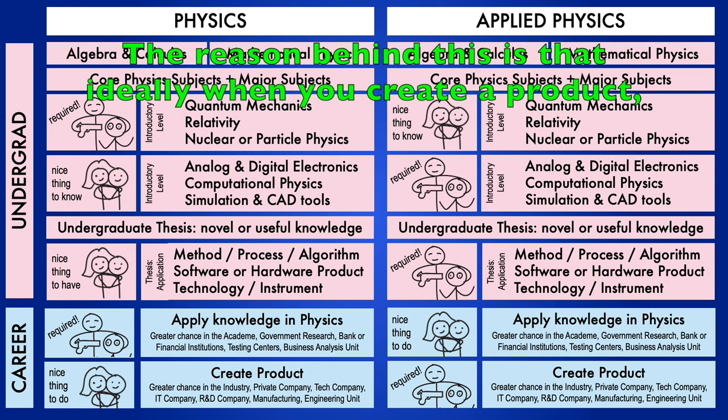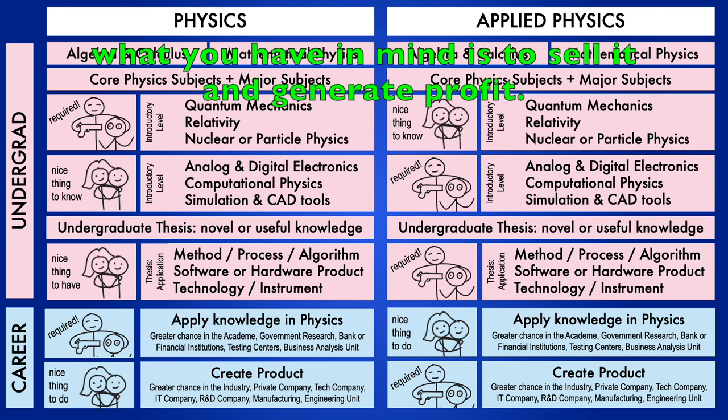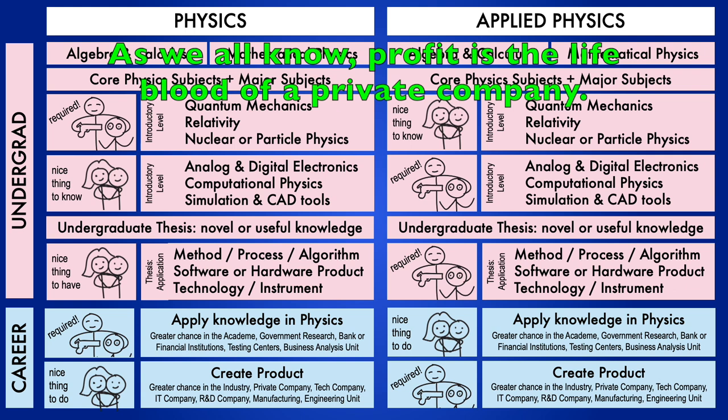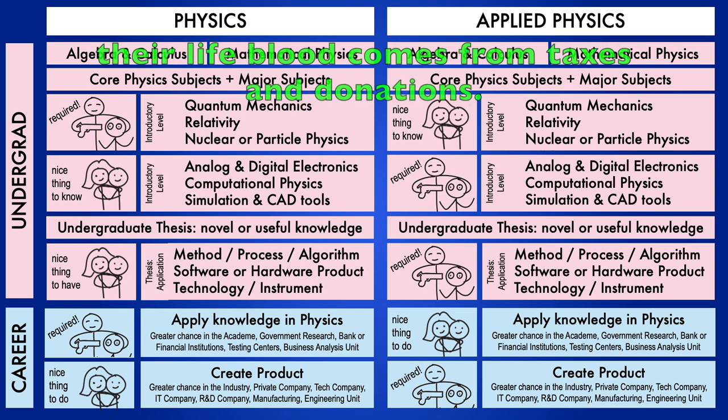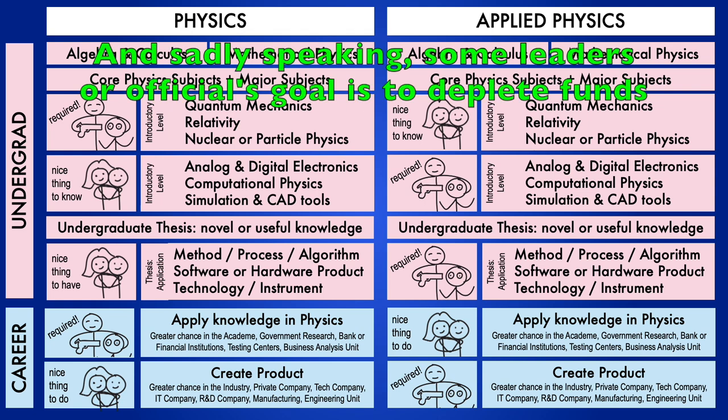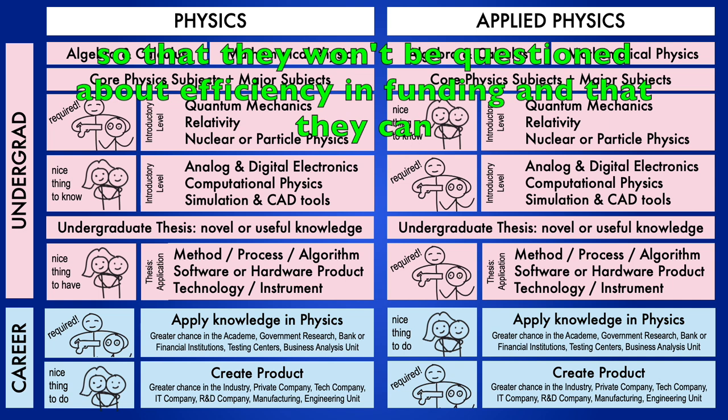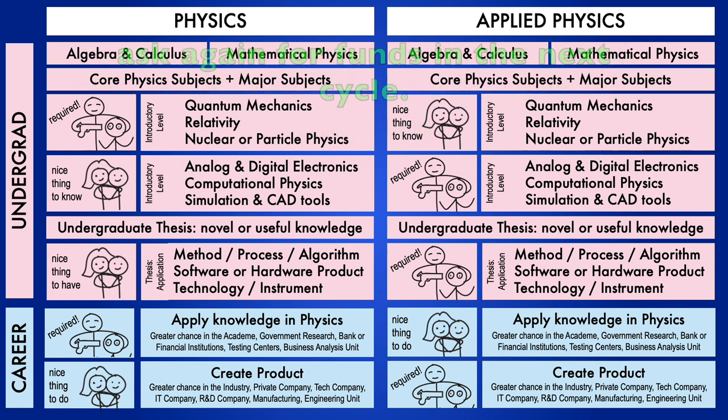This kind of work output is not usually seen in jobs designed for BS physics graduates. Usually, creating a product is just a nice thing to do in this line of work. The reason behind this is that ideally, when you create a product, what you have in mind is to sell it and generate profit. As we all know, profit is the lifeblood of a private company. On the other hand, in the government or nonprofit organizations, their lifeblood comes from taxes and donations. And sadly speaking, some leaders or officials' goal is to deplete funds so that they won't be questioned about efficiency in funding and that they can ask again for funds in the next cycle.